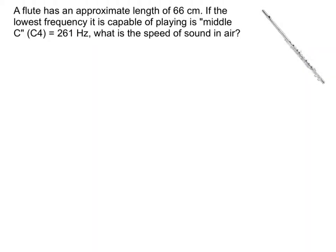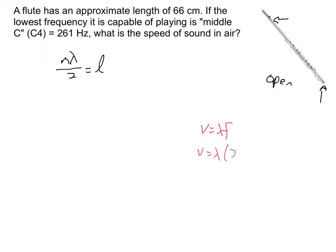I'll solve two quick problems. A flute is an open-ended pipe on both sides — air can escape through the base and through the mouthpiece. So we're dealing with n·lambda/2 = L. A flute has an approximate length of 66 centimeters. The lowest frequency it's capable of playing — which is middle C or C4 — is 261 hertz. We're looking for the speed of sound. Velocity equals wavelength times frequency, and I already know the frequency.